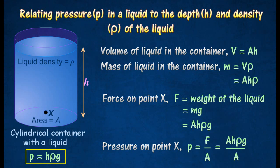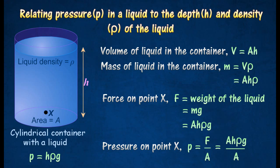The expression P is equal to h rho g, which shows that the pressure at any point in a liquid at rest is directly proportional to the depth of the liquid, the liquid density, and the gravitational field strength.